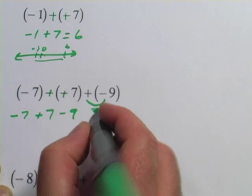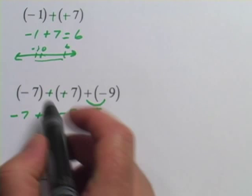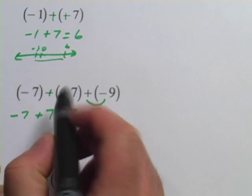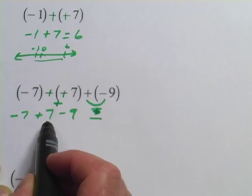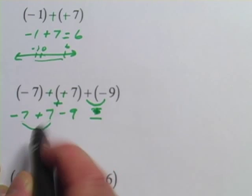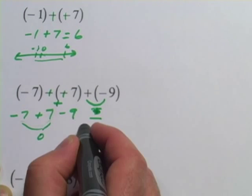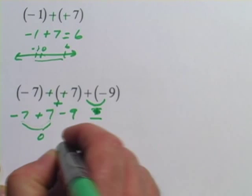It's sort of like a plus and a minus together simplify to a minus, whereas two minus signs together simplify to a plus. So negative 7 plus 7, well that adds up to 0 and then minus 9. So our answer is minus 9 on that one.